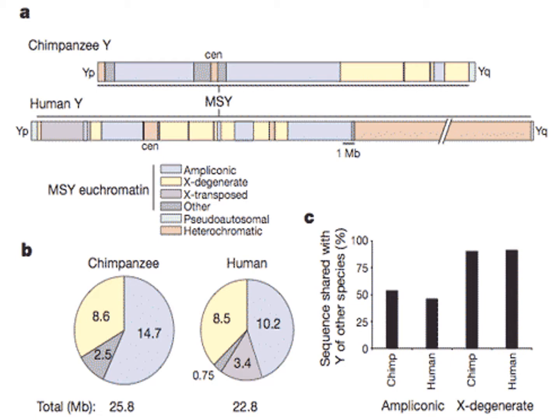In fact, the differences are so striking that the authors of the Nature article describe the discrepancy with the standard evolutionary model in a rather intriguing way. They wrote that indeed at 6 million years of separation, the difference in MSY gene content in chimpanzee and human is more comparable to the difference in autosomal gene content in the chicken versus the human at 310 million years of separation.